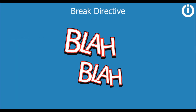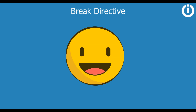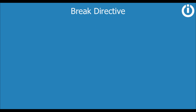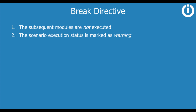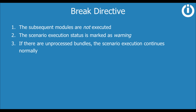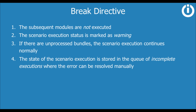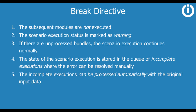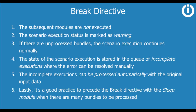It might have been a bit overwhelming, but we've managed to cover every aspect of the break directive. Here's a quick recap. When an error takes place: one, the subsequent modules are not executed; two, the scenario execution status is marked as warning; three, if there are unprocessed bundles, the scenario execution continues normally; four, the state of the scenario execution is stored in the queue of incomplete executions where the error can be resolved manually; five, the incomplete executions can be processed automatically with the original input data; and six, it's good practice to precede the break directive with the sleep module when there are many bundles to be processed.